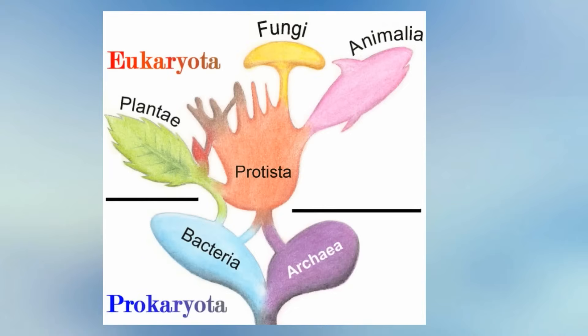The six kingdoms include Bacteria, Archaeobacteria, Plant, Protista, Fungi, and Animalia. These six include all living organisms on Earth.